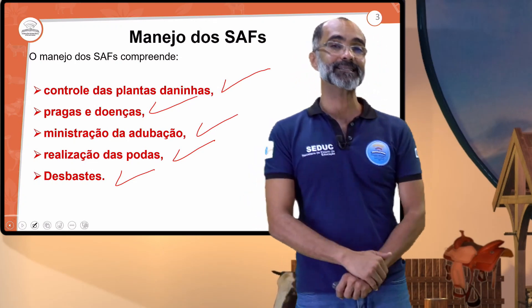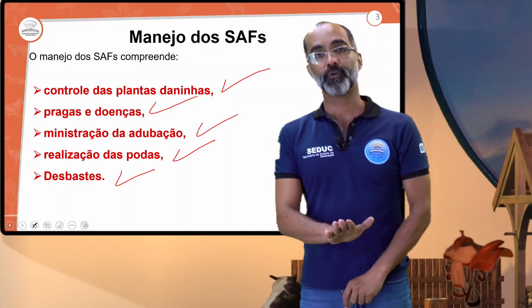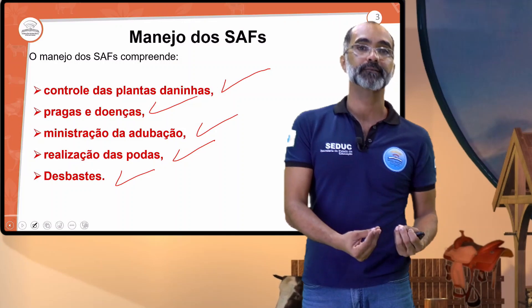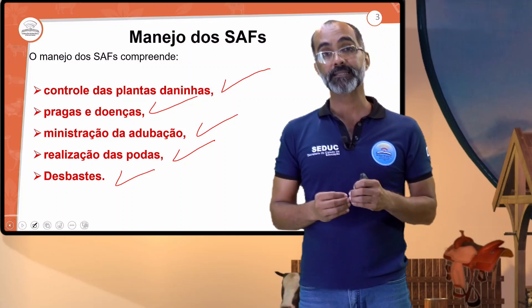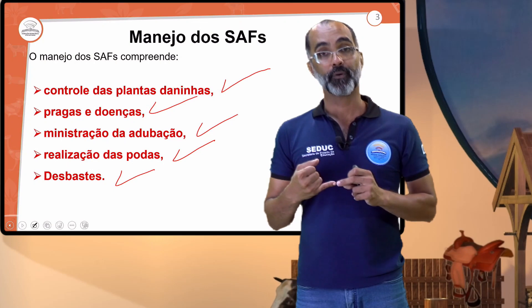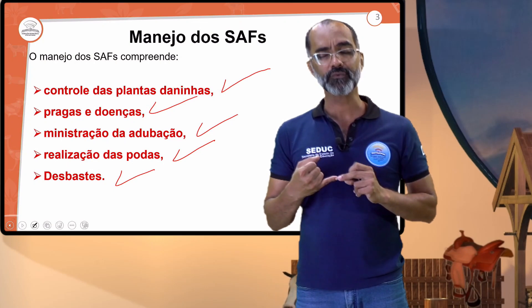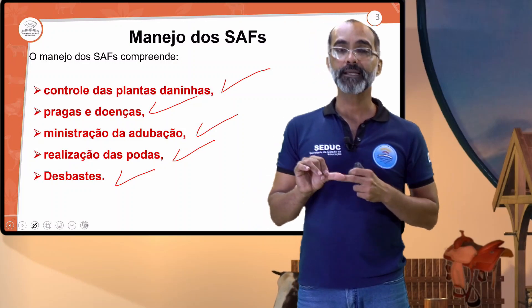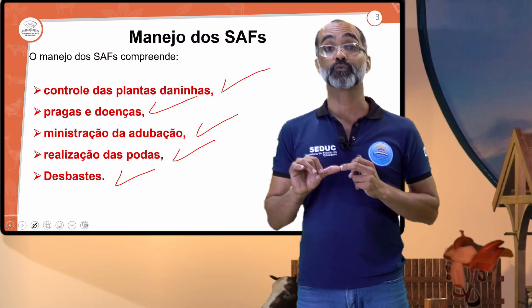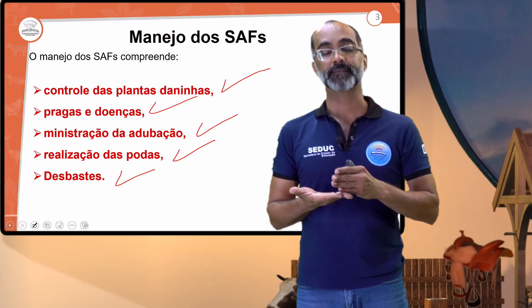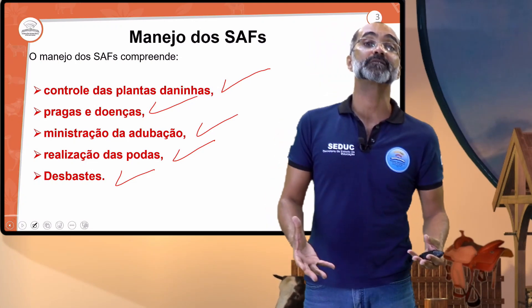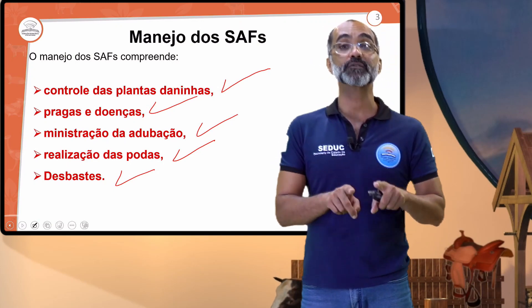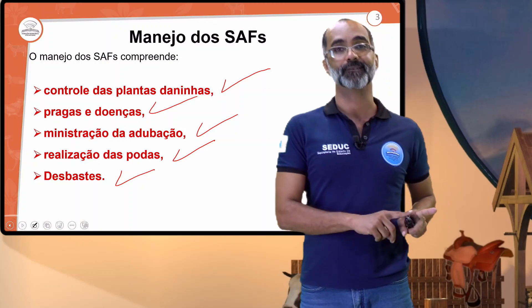Quando a gente fala sobre podas, está direcionado para as frutíferas. Essas podas têm suas particularidades: tem a poda de formação, poda de indução, floração, frutificação e poda higiênica, que têm suas etapas. Vamos ver também o que são os desbastes, que muitas vezes são realizados nas questões do período de floração.